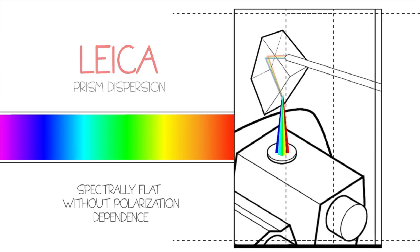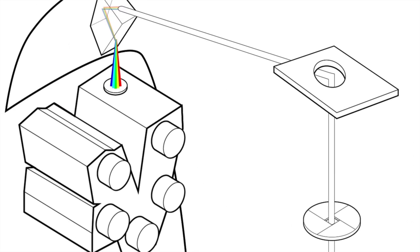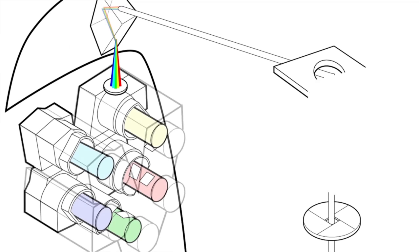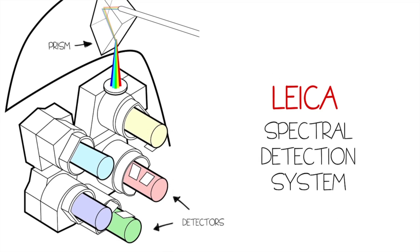Once dispersed by the prism, a specific spectral band of fluorescence emission can be collected at a single detector, or multiple bands can be arranged for simultaneous channel detection.